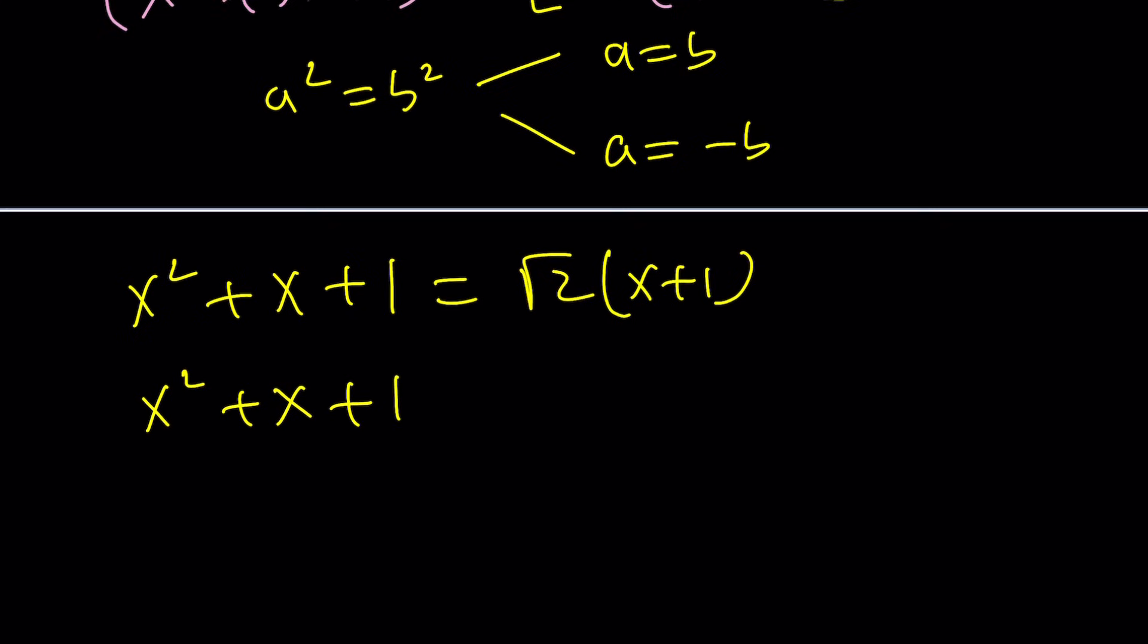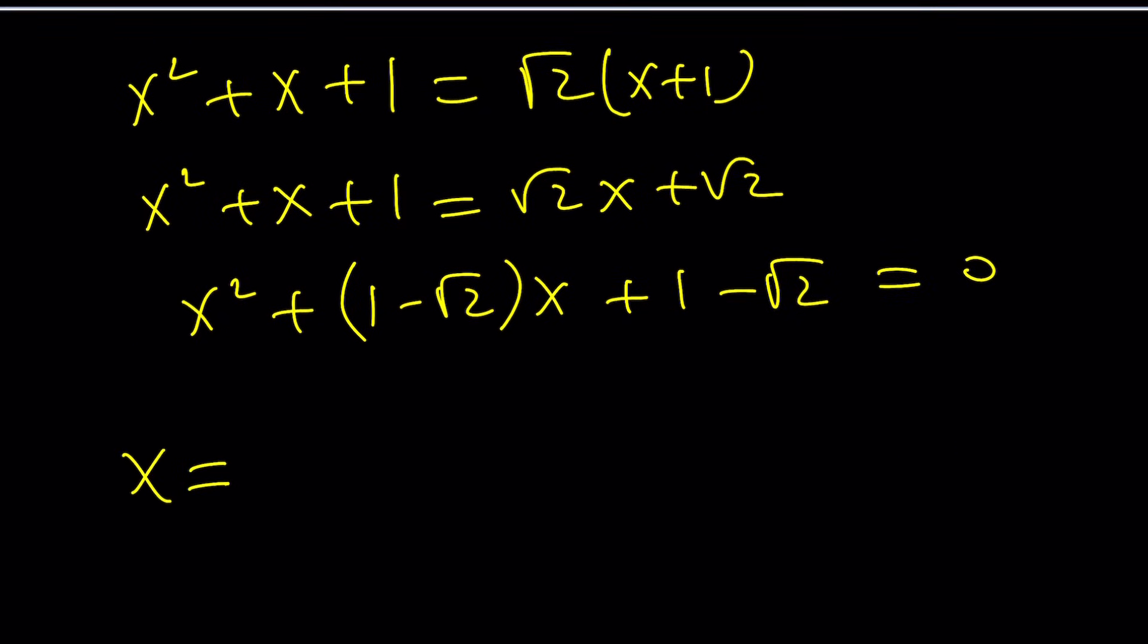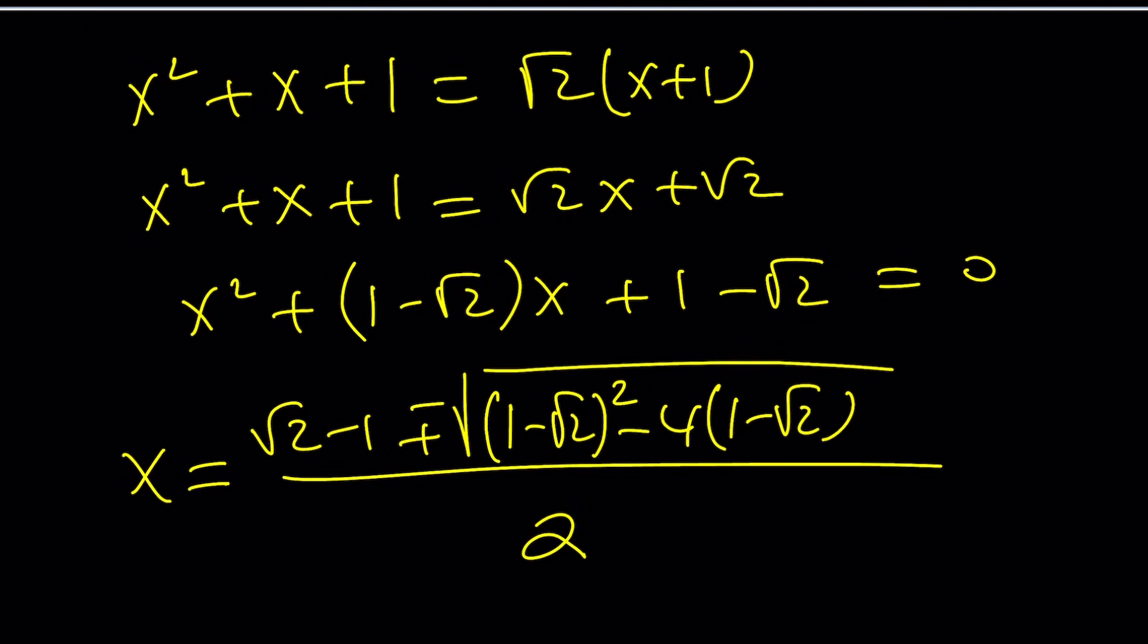This will become root 2x plus root 2 and then we can go ahead and put everything on the same side like 1 minus root 2 is going to be the coefficient of x and then 1 minus root 2 will be the constant term. Now we can solve this using the quadratic formula. Negative b root 2 minus 1 plus minus the square root of b squared which is 1 minus root 2 squared minus 4ac. That's going to be 4 times that and if you simplify this, you should get a solution. I'm not going to do it because I'll show you the solutions from Wolfram Alpha which was able to solve it by the way.